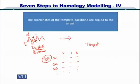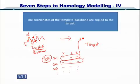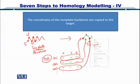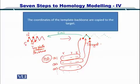Once you have looked at the coordinates, all you have to do is copy each coordinate and paste them in order. Once you have done this exercise, you will find that you are starting to generate the backbone, which is obviously very similar to the template. By looking at the coordinates of alpha carbons in the PDB, you can recreate the backbone in the target.